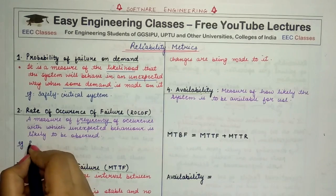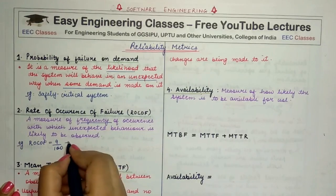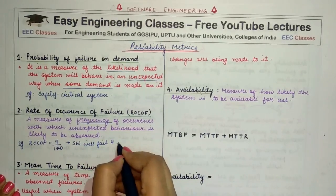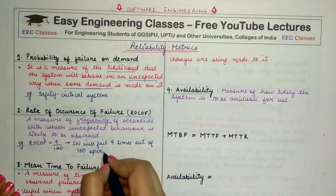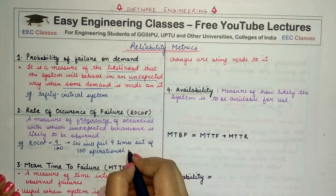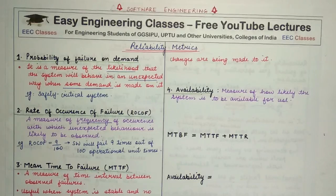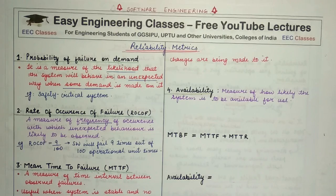For example, if our rate of occurrence of failure value is 9 out of 100, this means our software will fail or behave unexpectedly 9 times out of 100 operational unit times. So if we execute 100 times, the frequency of occurrence of unexpected behavior is 9 out of 100 units, telling us how frequently the failure will occur when we execute the software in a given time period.